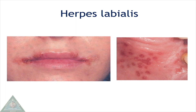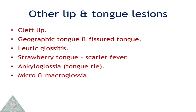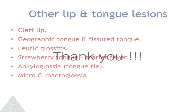Herpes labialis lesions are found in the lips and perioral skin. Other lip and tongue lesions include cleft lip, geographic tongue, fissure tongue, luetic glossitis, strawberry tongue seen in scarlet fever, ankyloglossia, and micro and macroglossia.